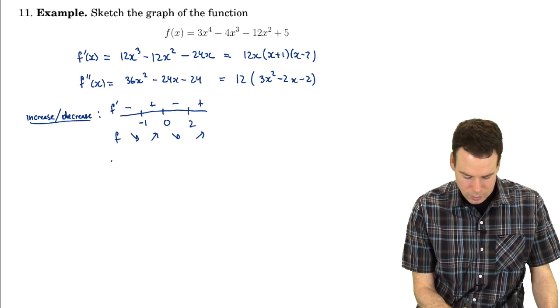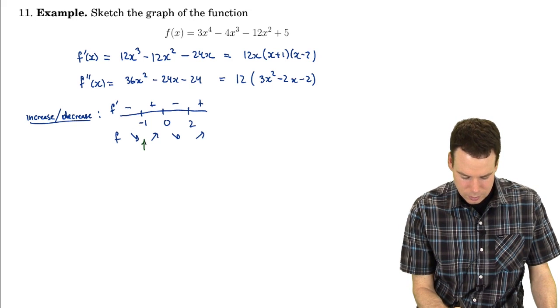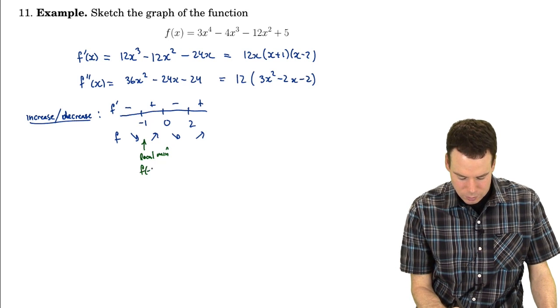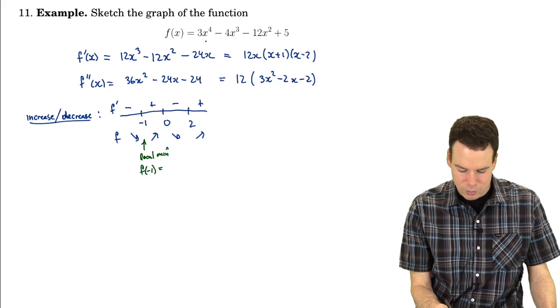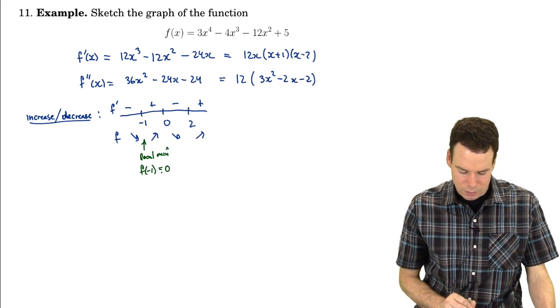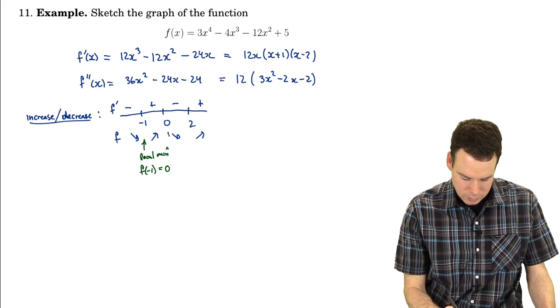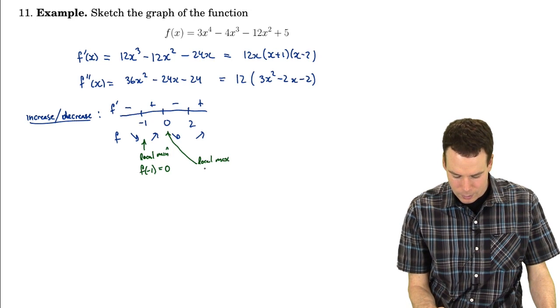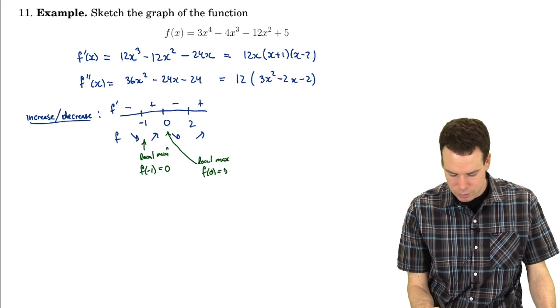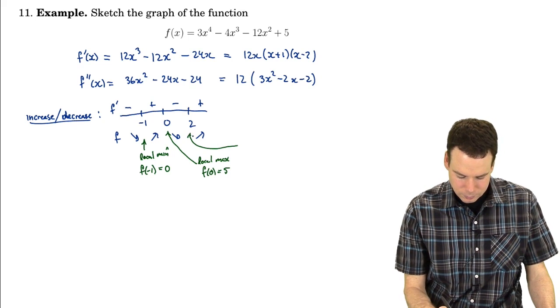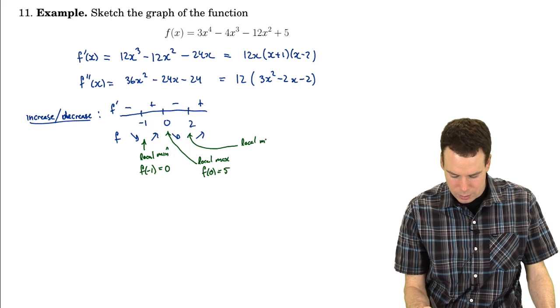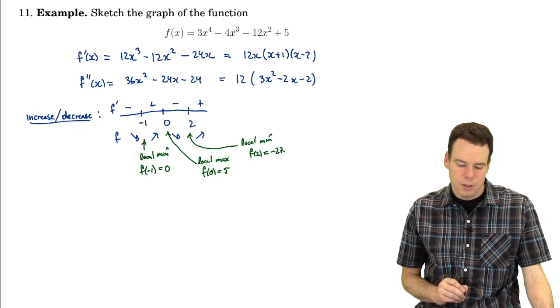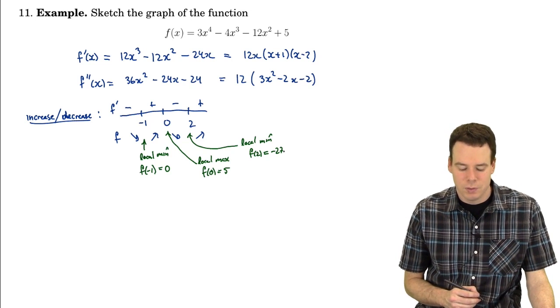We have a local minimum at x=-1 with f(-1)=0. The next point is a local max at x=0 with value 5. Finally, we have a local min at x=2 with value -27. So we know intervals of increase and decrease and the values of the local extrema.